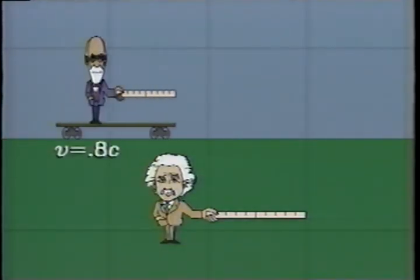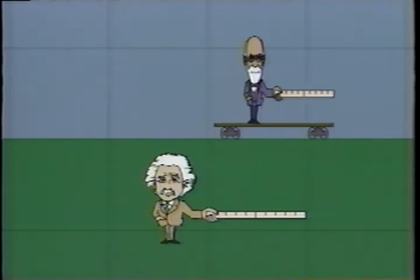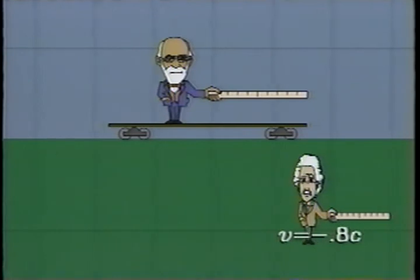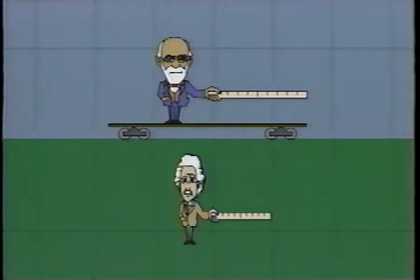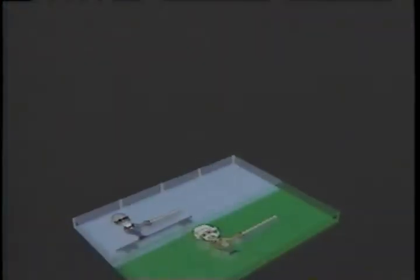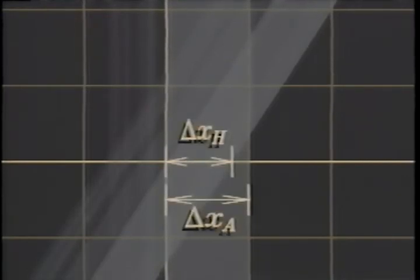For example, Albert thinks that Henry's ruler isn't quite a meter long, while Henry, seeing Albert speed by, thinks Albert's ruler is shorter. On the space-time diagram, Albert measures lengths on his space axis, where Henry's ruler is shorter. But on Henry's axis, the situation is reversed, and Albert's ruler is shorter.